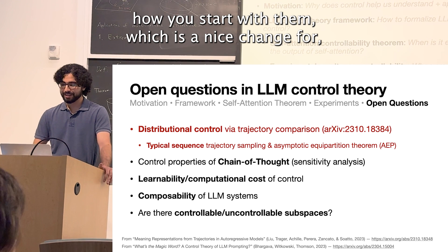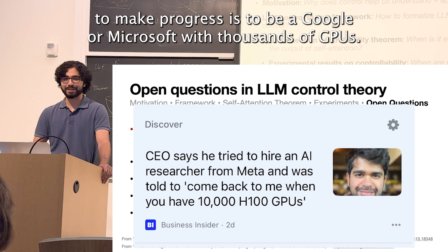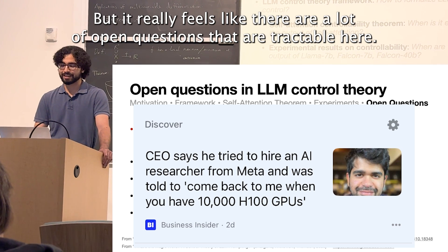which is a nice change for language models where often it can feel like the only way to make progress is to be Google or Microsoft with thousands of GPUs. But it really feels like there are a lot of open questions that are tractable here.